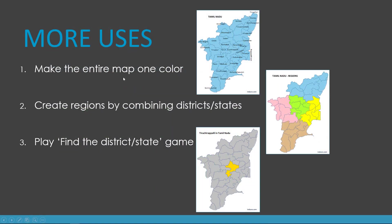Specifically, we're going to talk about three use cases. The first is how to make the entire map a single color. The second is how we can group certain districts into regions and color them differently. The third is how we can play a find-the-district game. I'm using district because I'll use the Tamil Nadu map to illustrate, but the concept applies to all heat map templates on inzara.com — for country maps like the US, just replace 'district' with 'state'.